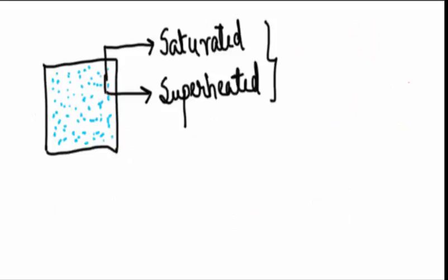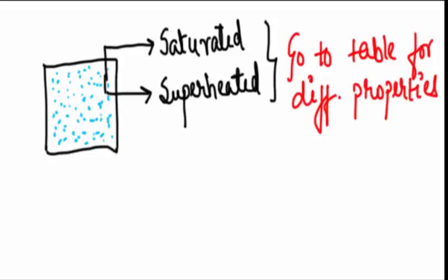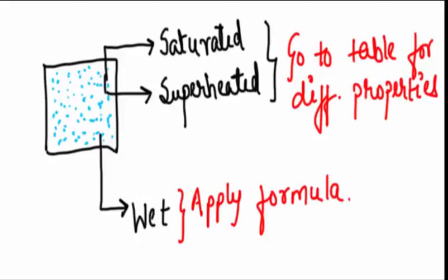Now once you determine the state of steam, then for saturated and superheated region you can use the steam table, and for wet region you can use formulas which I will discuss in a short while.